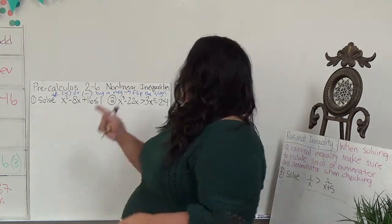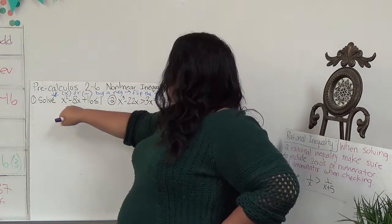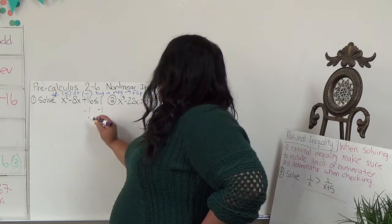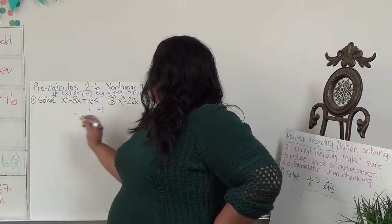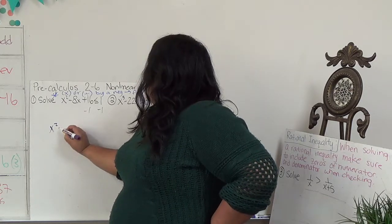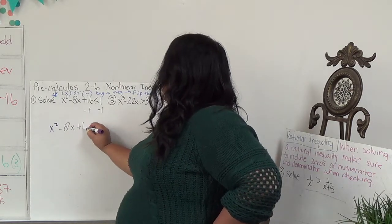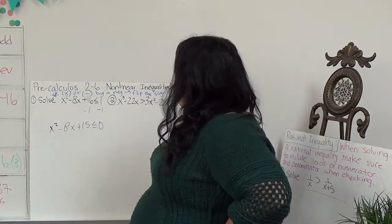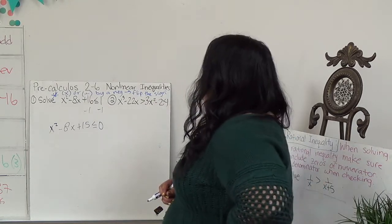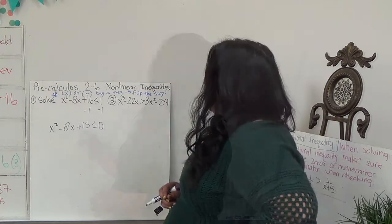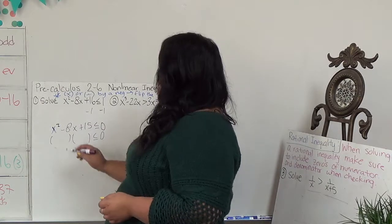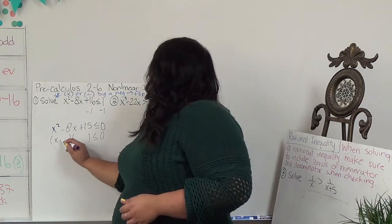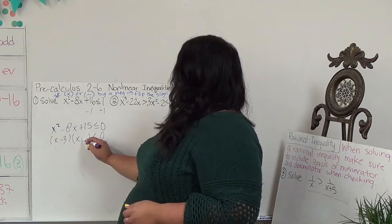We have x squared minus 8x plus 16. We have lots of ways to solve quadratic equations. I'm going to start by subtracting 1 so we have everything on one side and then 0 on the other. So we end up with x squared minus 8x plus 15 less than or equal to 0. Two numbers when multiplied together get me positive 15, but when added together get me negative 8. This factors as x minus 3 and x minus 5.